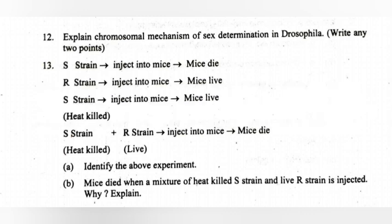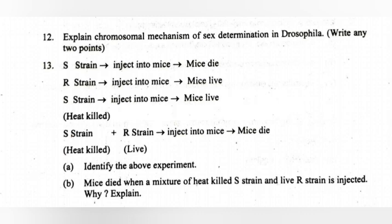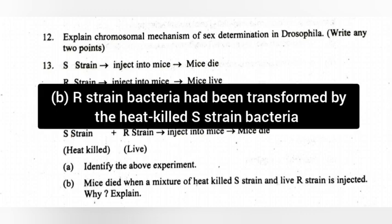13. A. Identify the experiment. Answer: The Griffith experiment. B. Mice died when a mixture of heat-killed S strain and live R strain bacteria is injected. Explain. Answer: R strain bacteria have been transformed by the heat-killed S strain bacteria.